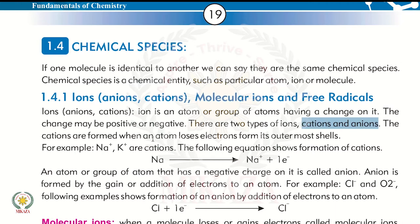Cations are formed when an atom loses electrons. We know that an atom is neutral, meaning electrons and protons are equal. Suppose an atom has four electrons and four protons — it loses one electron, so now it has three electrons and four protons. The positive value increases, giving it a positive charge. This type of ion we call a cation, because it is positive and is attracted to the cathode.